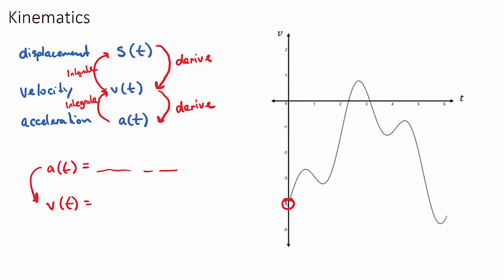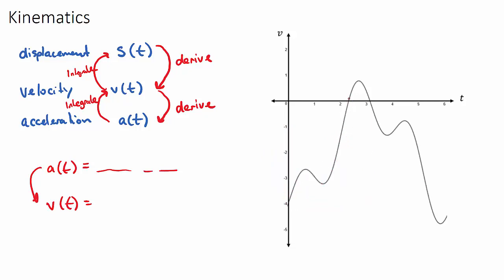If the velocity is negative, the object is traveling backwards — even if the curve dips and rises within that negative region, the object is still going backwards. That variation just means it's accelerating and decelerating, but still in the negative direction. The object only changes direction when the velocity crosses from negative to positive — that's when it stops going backwards and starts going forwards.